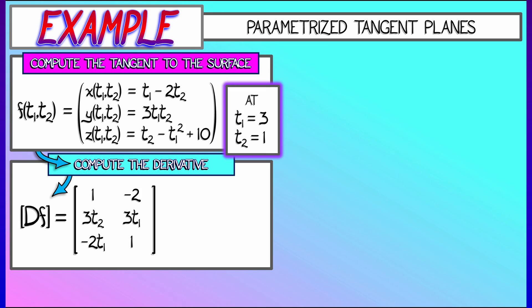We have to evaluate the derivative at this location where t1 is 3 and t2 is 1. That gives us 1, 3, negative 6, negative 2, 9, 1. These two column vectors are tangent to the parametrized surface at the base point.